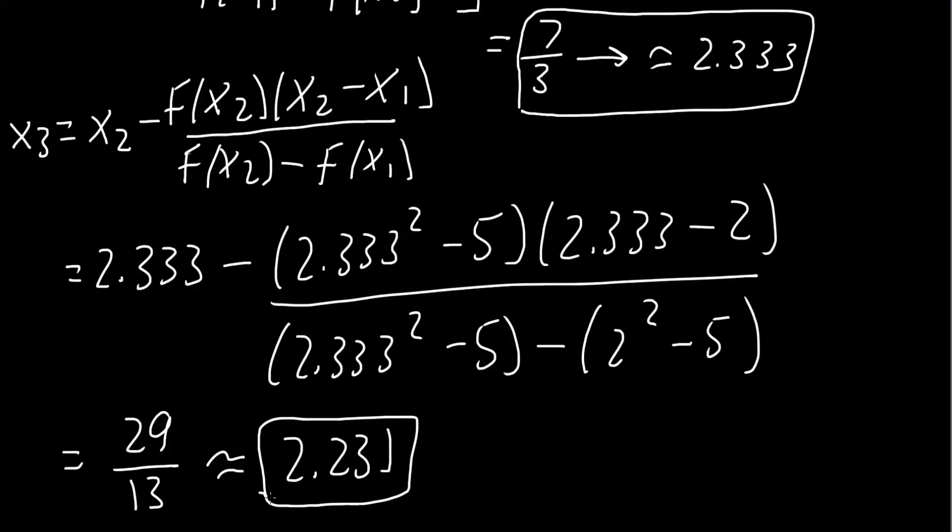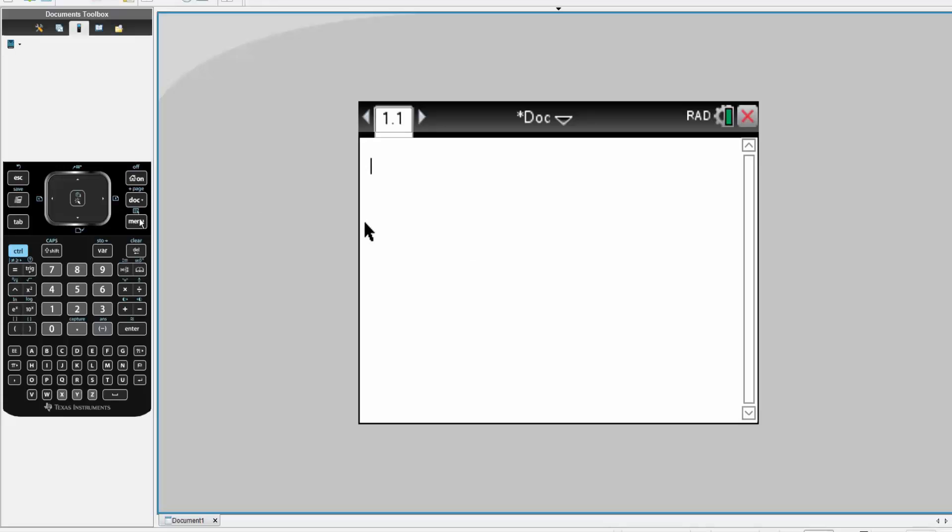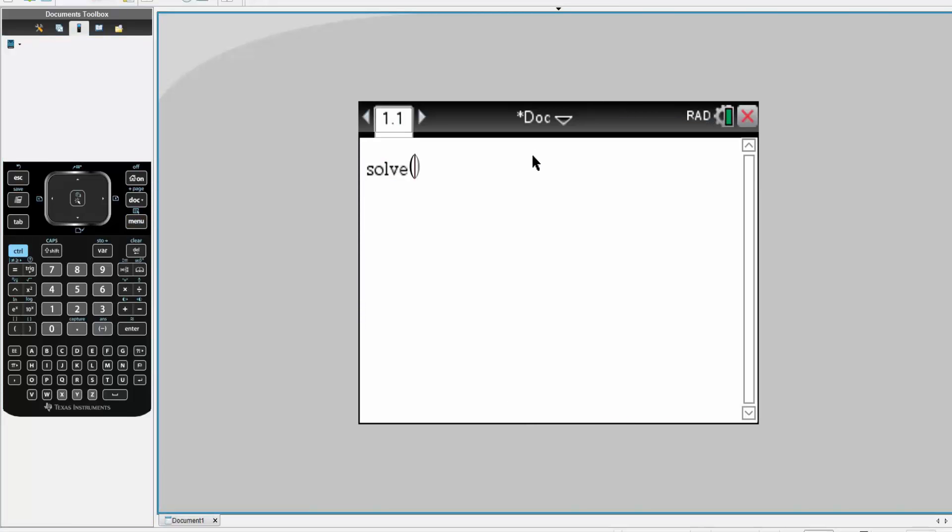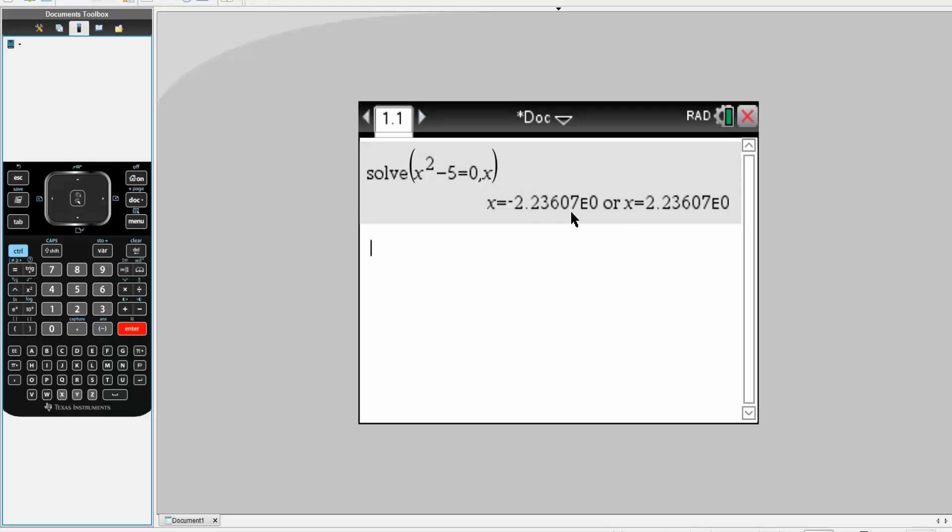Now I will actually solve this problem using the TI-Inspire to show you that we were pretty close in this answer. I will hit Menu, Algebra, Solve. In our problem, we had x² - 5 = 0, and we want to solve for x. Simply hit Control, Enter. So I get -2.236 and +2.236.